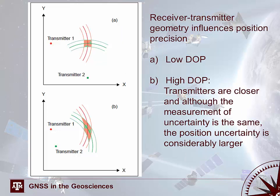The receiver-transmitter geometry influences position precision. In case A, the satellites are farther apart — more spread out — so you have less overlap in the position uncertainty areas. In case B, the transmitters are closer together, giving high dilution of precision; even though the timing measurement uncertainty is the same for each transmitter, the positional uncertainty is considerably larger. The orange area represents the possible receiver location based on timing errors from each satellite — case A has a smaller area than case B.